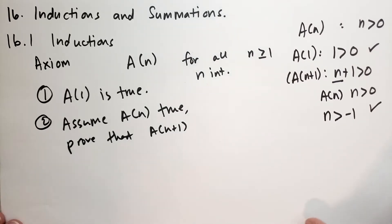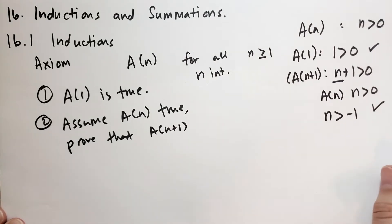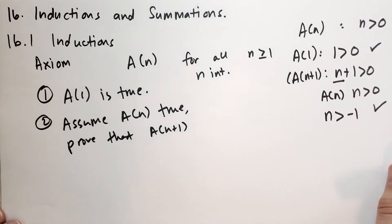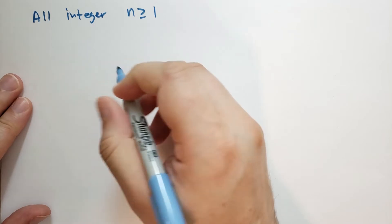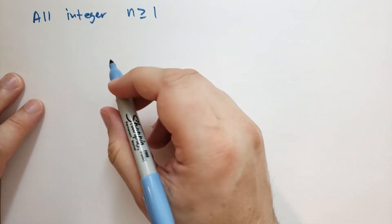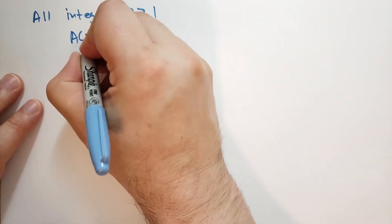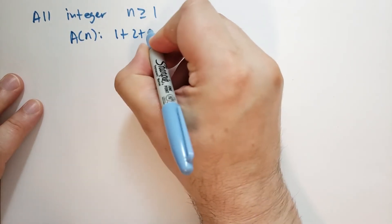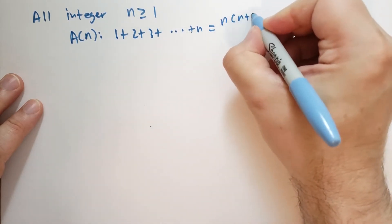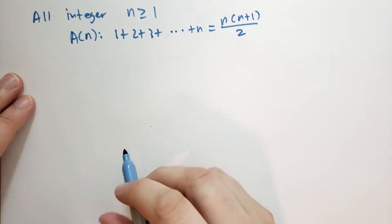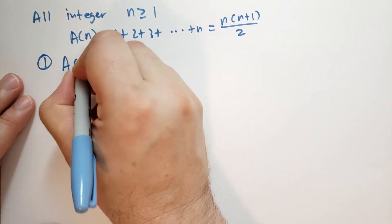That sounds rather simple, but this is how induction works. He then goes through some examples to explain the process and show its power. In this example, he says that for all integers n greater than or equal to 1, the assertion A(n) says that the sum of the numbers all the way up to n is equal to n times (n+1) over 2. To prove this, we first prove that A(1) is true.